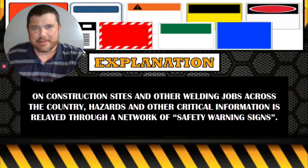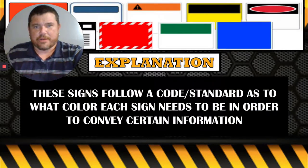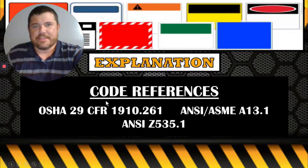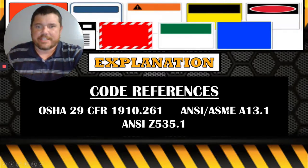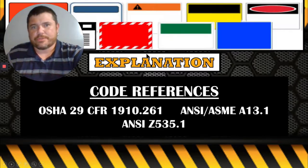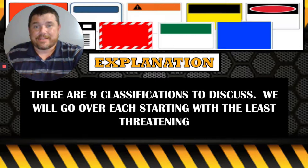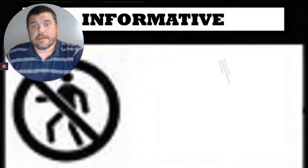These signs follow codes. The codes are OSHA 29 CFR 1910, ANSI/ASME A13.1, and ANSI Z535.1. These are the standards that dictate what colors correspond to what level of sign. There are going to be nine different classifications of signs — nine different colors that we look for when trying to figure these out.